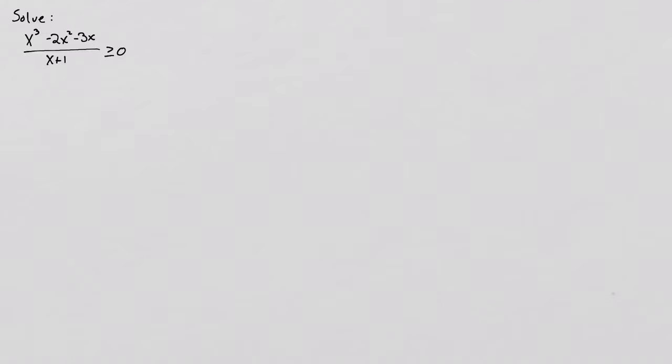All right, so this is going to be number four on suggested problems activity 13.3. We're actually going to be solving this rational inequality, which is x cubed minus 2x squared minus 3x divided by x plus 1. And whatever values of x we get, it's going to have to be greater than or equal to 0.